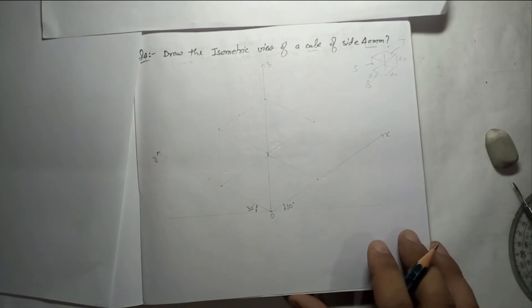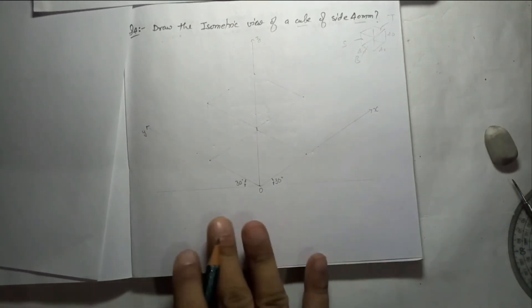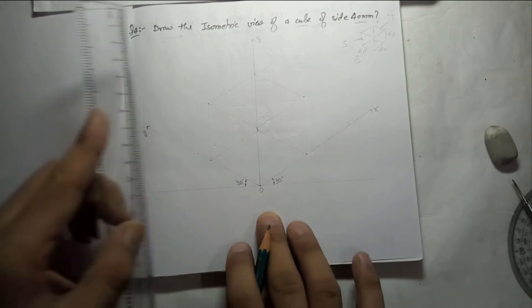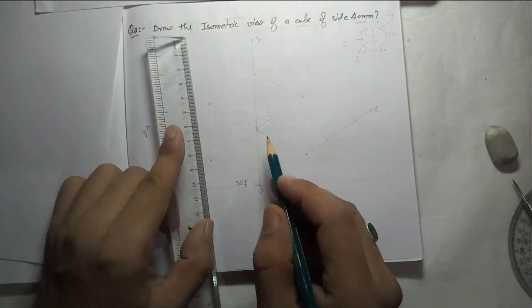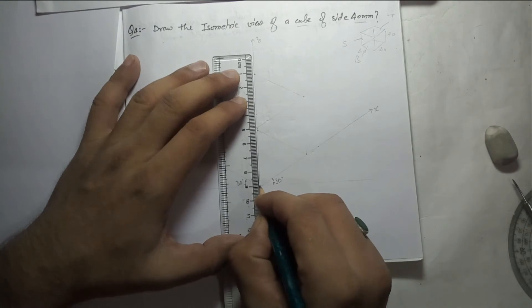So always first draw the light diagram. This is the diagram of a cube. Now we will make the dark portion. Which part will be visible? Just try to see - if our object is there and you want to see this, you cannot see the rear edges of the cube, so it means what I have to darken.